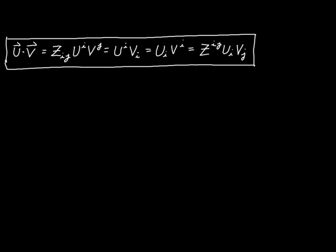Which one do you use? It depends on the circumstances. If all you know about your vectors is the contravariant components, you'd use the expression with z^ij. If all you know is the covariant components, you'd use the expression with z_ij. And if you know the covariant components of one vector and the contravariant components of the other, you'd use one of the two simpler expressions.